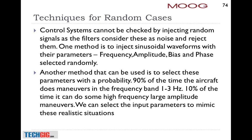If you are working on control systems, just generating random noise doesn't help. I cannot have random noise injected into a filter — it will treat it as noise and remove it. So what we normally do is generate a sine wave with a random frequency, a random amplitude, and a random bias term, and these waveforms are injected into the system. This works very well for us and we have found enough issues — we still find issues just by following this method.